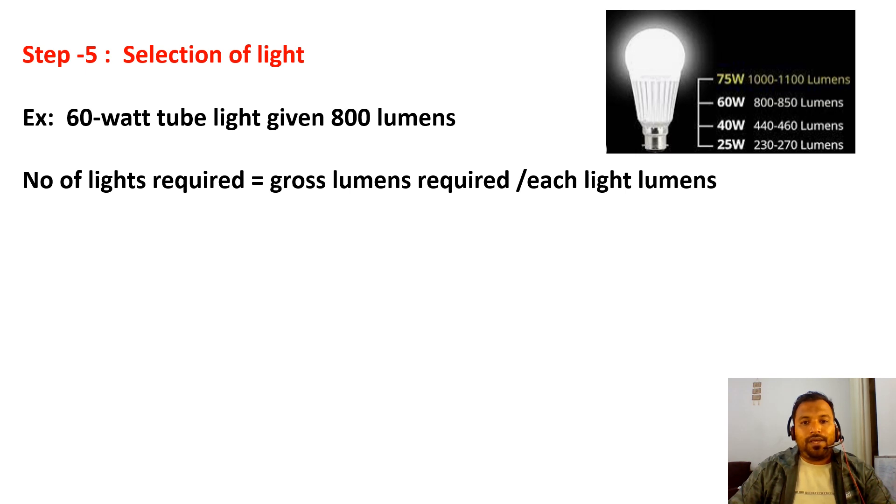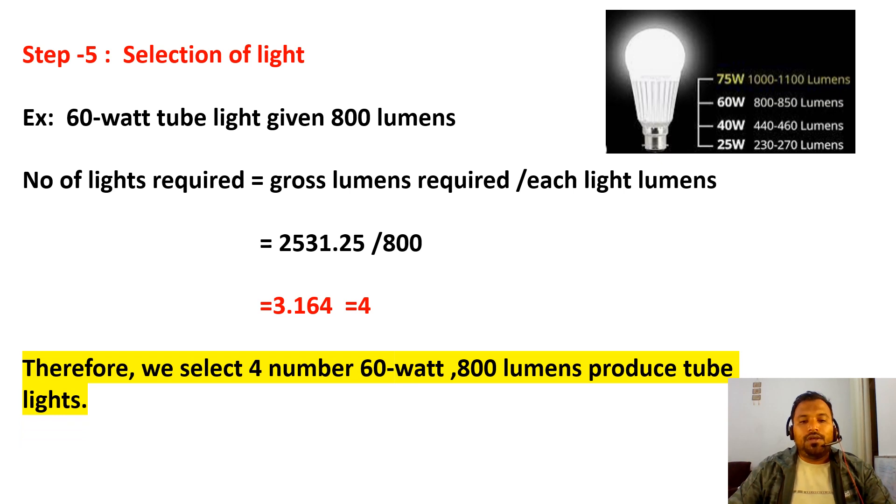Number of lights required equals gross lumens divided by each light lumens. So 2531.25 gross lumens divided by 800 equals 3.164. We need to consider four number of lights. Four lights look good and efficiency-wise it's fine. So we can conclude that for a 3 by 3 bedroom, we require four 60 watt, 800 lumen tube lights.